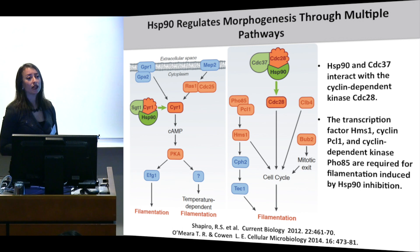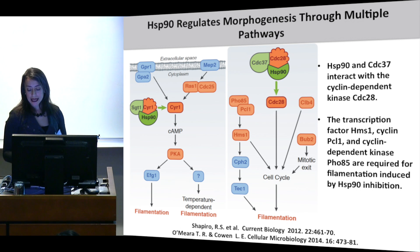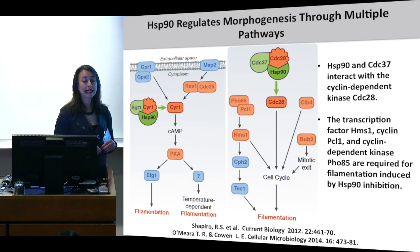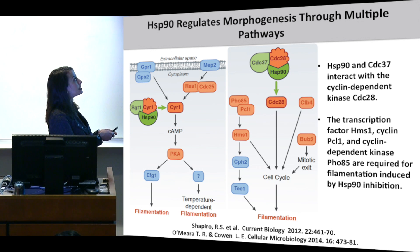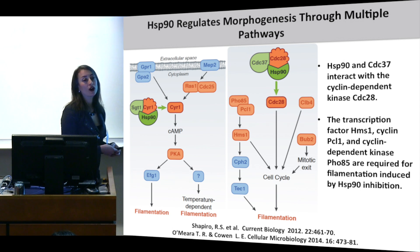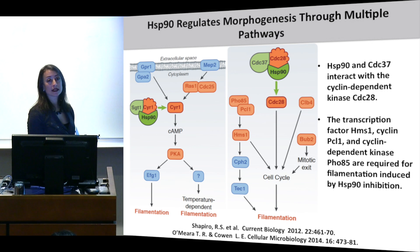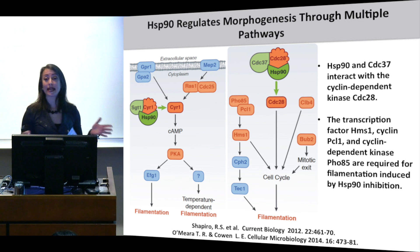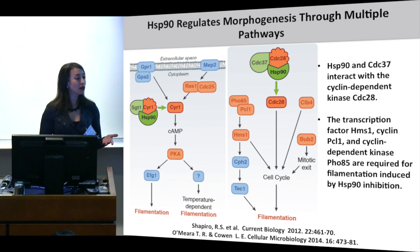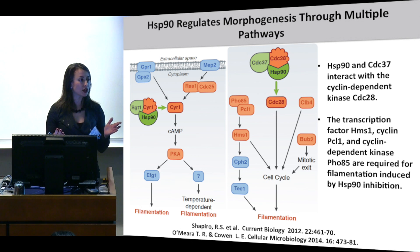Since Hsp90 is so pleiotropic, it probably affects many other pathways influencing filamentation. Screening a small set of about 3% of the genome, we found several key regulators of morphogenesis through which Hsp90 works. One set involves cell cycle control — Hsp90 together with co-chaperone CDC37 interacts with cyclin-dependent kinase CDC28. We also found another pathway not previously characterized in C. albicans involving cyclin-dependent kinase FO85, cyclin PCL1, and transcription factor HMS1, which is more specialized in response to Hsp90 inhibition or elevated temperature.